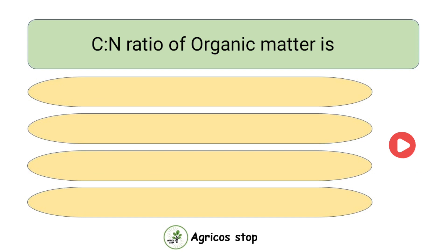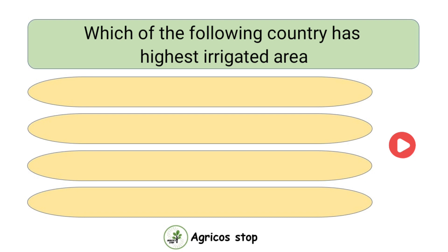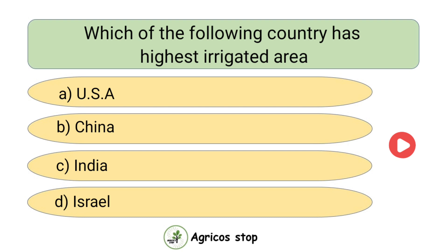C:N ratio of organic matter is — options are 10:1, 1:10, 8:1, and 1:8. The answer is 10:1. C:N ratio of organic matter is 10:1.